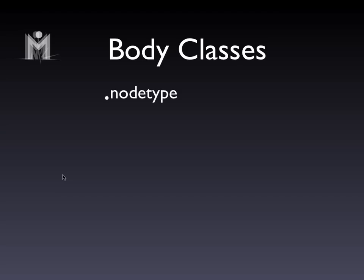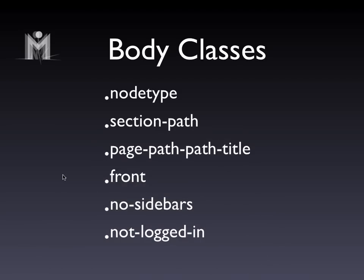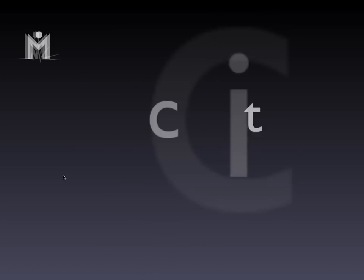These body classes are really interesting. You get node type — so you could say for all stories make the background green. Another powerful one is the section: if you're in the about section of a website, you can set a menu item to look bold or add extra functionality. Sometimes the active class is put into a menu item, and the section path is another way of reaching in and applying stylistic overrides. There's also one for the actual page path or URL alias, whether you're front or not front, whether it doesn't have sidebars, or if you're not logged in.